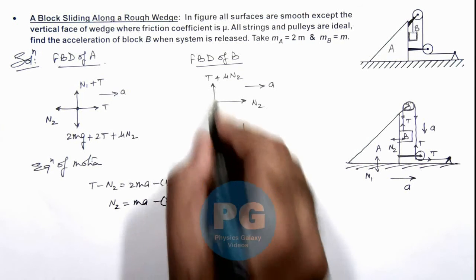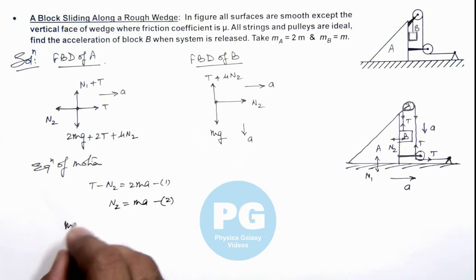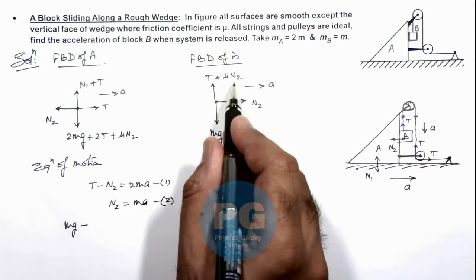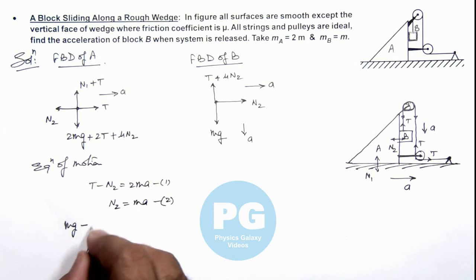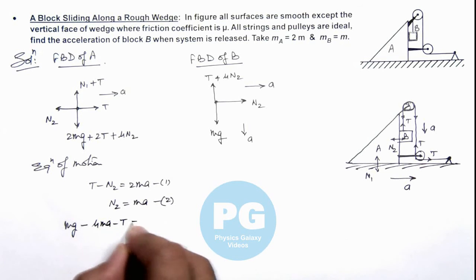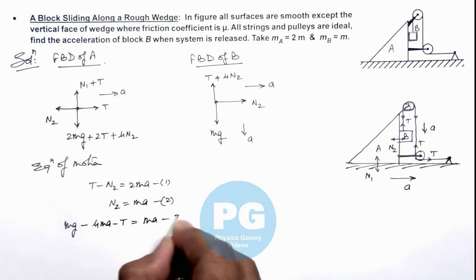And for its vertical motion we can write mg - μN₂ - T = ma. As we are having the value of N₂ as ma, we can write mg - μma - T = ma, that is equation 3.